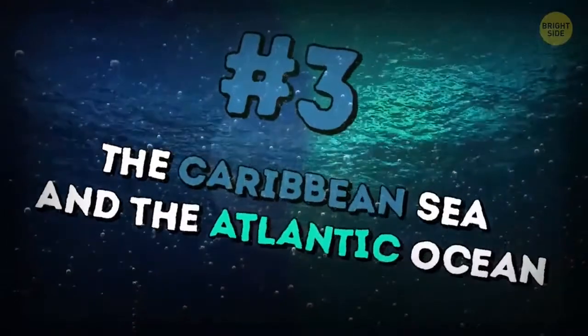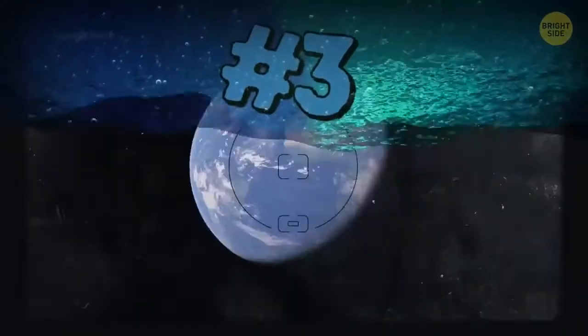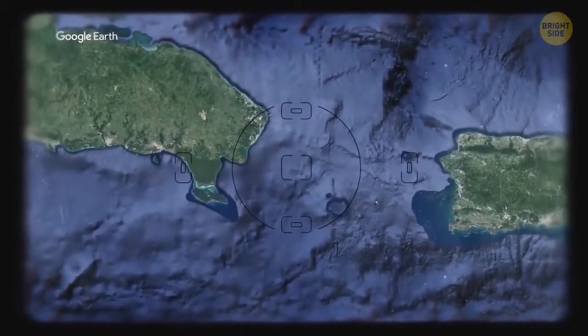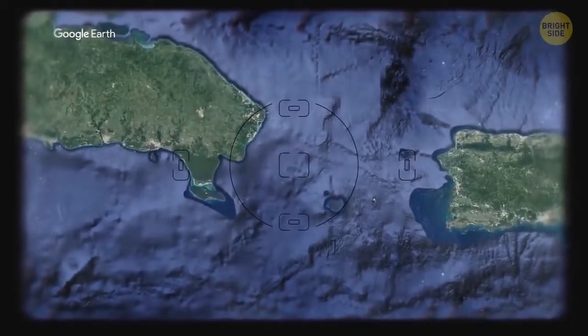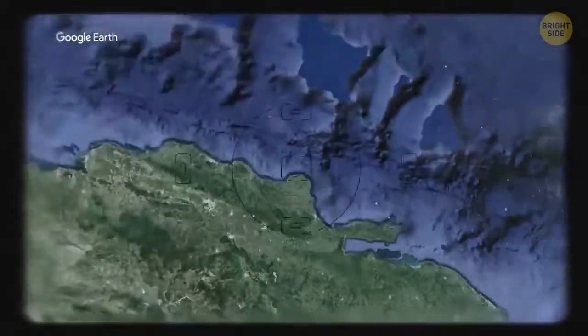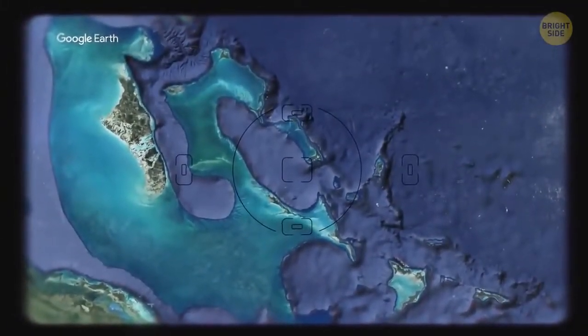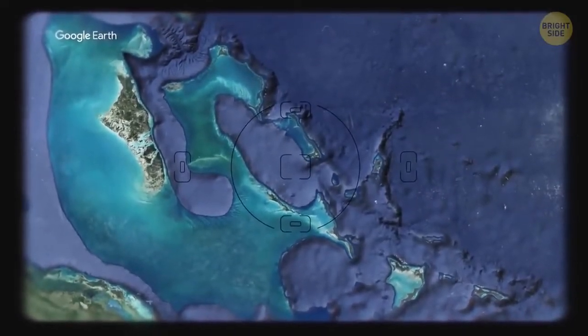The Caribbean Sea and the Atlantic Ocean. The place where they meet is near the Antilles and looks like someone has painted water with different shades of blue. Another place where these two meet is the Eleuthera Island of the Bahamas. The Caribbean seawater is turquoise and the Atlantic Ocean water is dark blue.